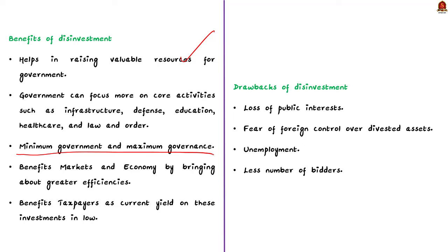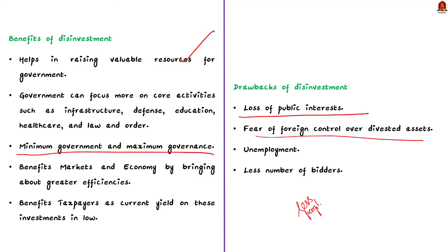The drawbacks of disinvestment include: first, loss of public interest — PSUs are resources of the nation belonging to the people, and selling them to private companies seriously affects people's welfare; second, fear of foreign control over disinvested assets; third, issues with workers — jobs for lakhs of workers in PSUs will be endangered by privatization; and finally, a less number of bidders for the stake, meaning there are actually fewer people willing to participate even when the government plans to disinvest.